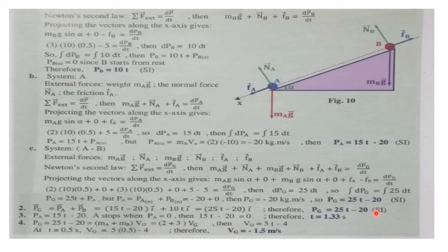In part 3, we need to calculate the time needed by A to stop — that is, the time when VA equals 0 or PA equals 0. We have the expression PA equals 15t minus 20. A stops when PA equals 0, that is 15t minus 20 equals 0. Therefore, t equals 1.33 seconds.